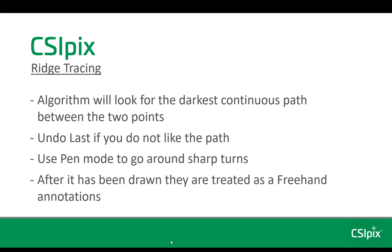Use pen mode to go around sharp turns — switch out of ridge tracing mode and go to pen mode if you want to go around a sharp turn. After a ridge has been drawn, ridges are treated as freehand annotations.